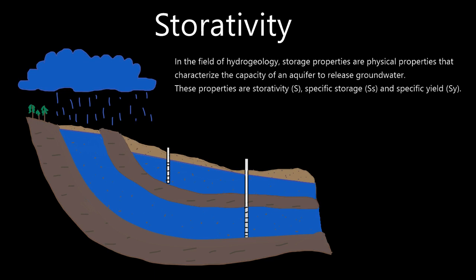How much water is going to be released from storage in the aquifer — think of it like that. So if you hear 'storage properties' or 'Storativity,' those are the same things. In the field of hydrogeology, storage properties are physical properties that characterize the capacity of an aquifer to release groundwater. These properties are Storativity, Specific Storage, and Specific Yield.